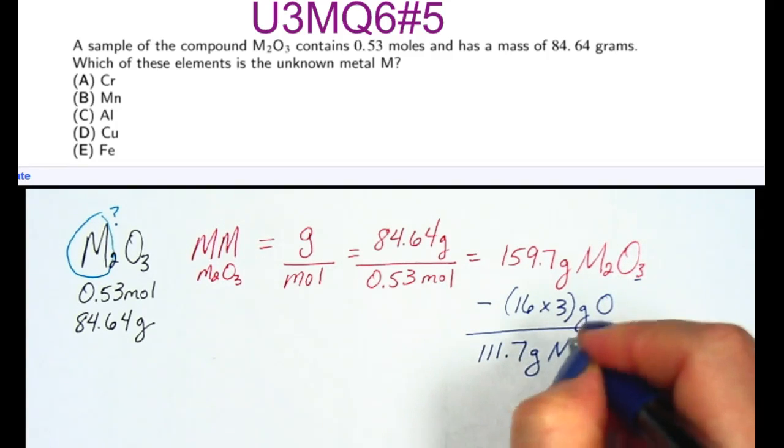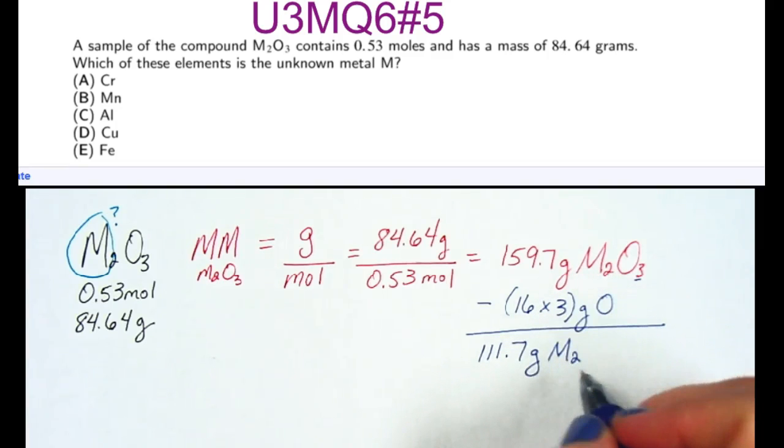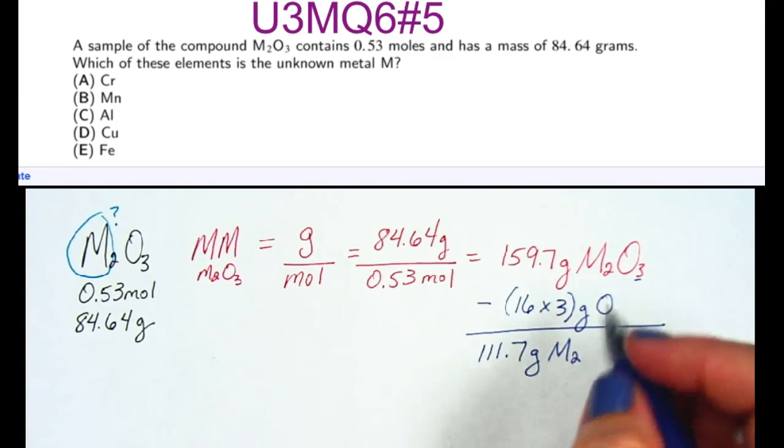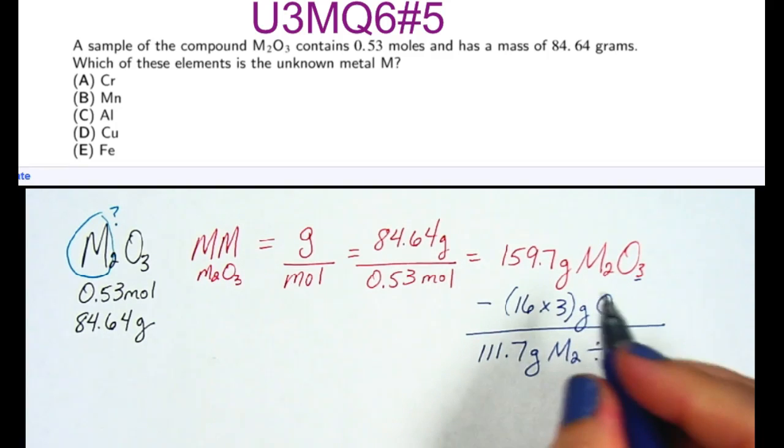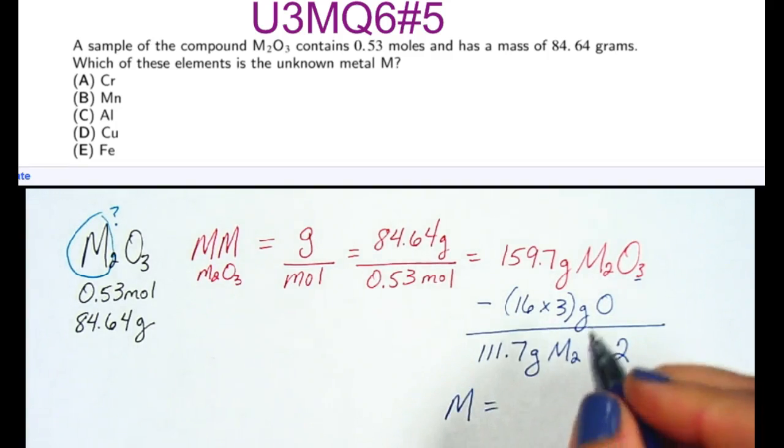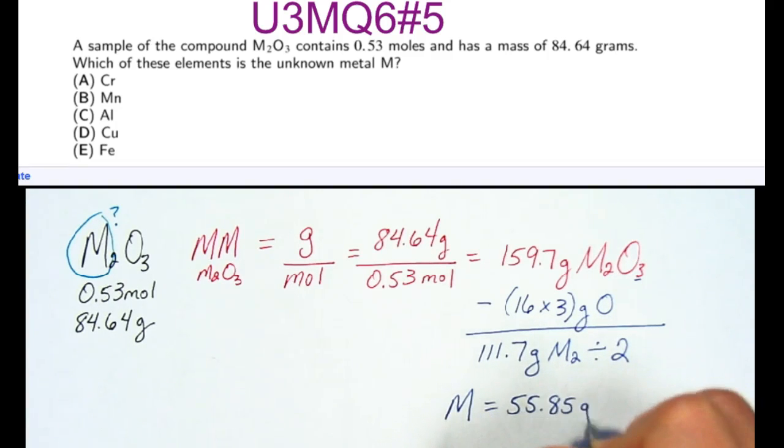What we have left is M2, or 2 of the metals. If we divide this amount by 2, we can find the mass of just the metal by itself, which is 55.85 grams.